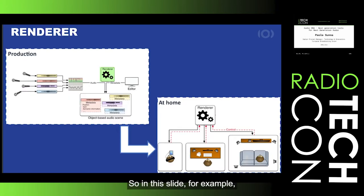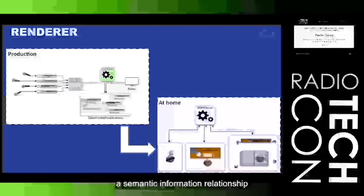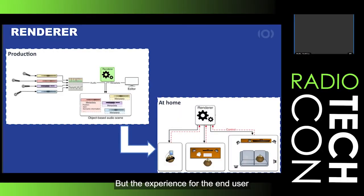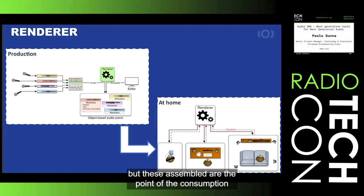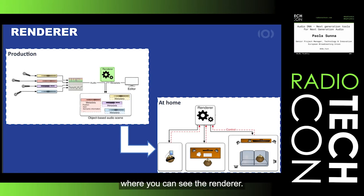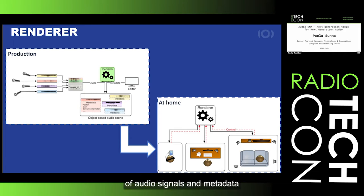In this slide, you can see that the media content is represented by a set of individual assets — the objects — plus the metadata. This metadata can be, for example, the position, the gain, semantic information, and relationships or associations between the objects. The experience for the end user is not assembled at the point of mixing, but at the point of consumption where the renderer resides. The renderer accepts as input the audio signals and the metadata, then transforms them to different configurations for different speaker layouts, and is also capable of reacting to inputs from the user.